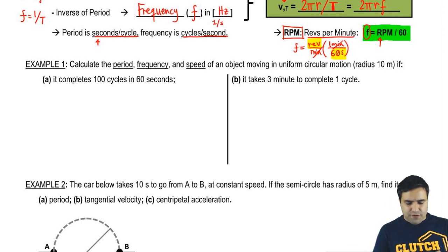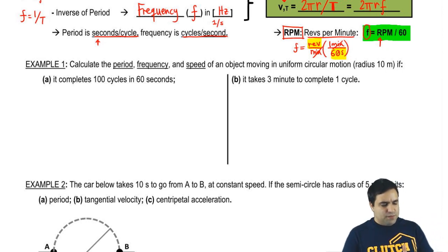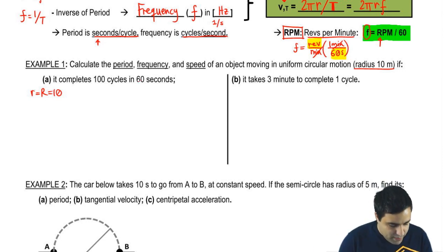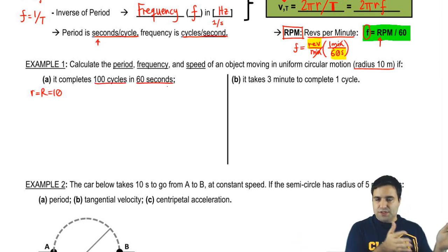All right. So let's do this. Calculate the period, frequency, and speed of an object moving in uniform circular motion of radius 10. So again, my radius is 10. And you're going around a circle of radius 10 at the edge of that circle. So that's also your little r. And it completes 100 cycles in 60 seconds. So what's your period? What's your frequency? So what I recommend you do here, whenever you have something like this, you do this in this much time or you do this many things or whatever, you can just write these as a fraction.